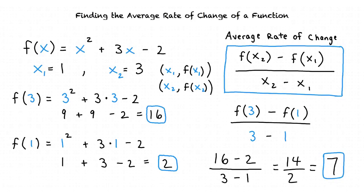The average rate of change of the function f of x from x equals 1 to x equals 3 is 7. To summarize: we start by labeling our two x values as x1 and x2, then find f of x2 and f of x1 by substituting into the function, then substitute those values into the average rate of change formula, simplify, and that gives us our answer.